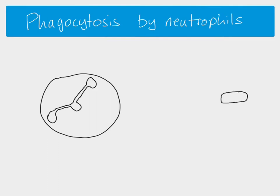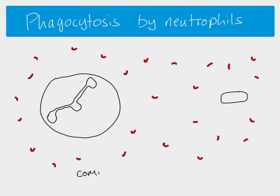Here is our neutrophil and here is a pathogen that has entered the body. In the blood and tissue fluid we have proteins, and these proteins are called complement proteins. They help with the process of phagocytosis by attaching onto the surface of a pathogen, acting like a marker. Because they enhance the process of phagocytosis, they are called opsonins.